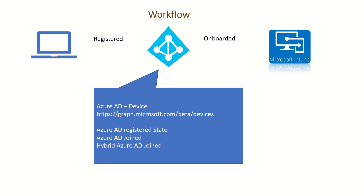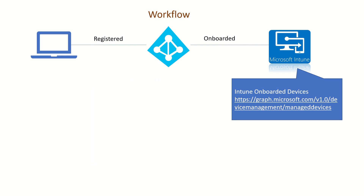The information you get from the /devices endpoint will not include information captured by Intune as a service or by the Intune client sitting on an endpoint. If you want information about device objects you see on endpoint.microsoft.com, you go to graph.microsoft.com/v1.0 or /beta then deviceManagement/managedDevices. From this endpoint you get the information captured by the Intune client that's available on endpoint.microsoft.com. These are the first two basic differences between the two objects.